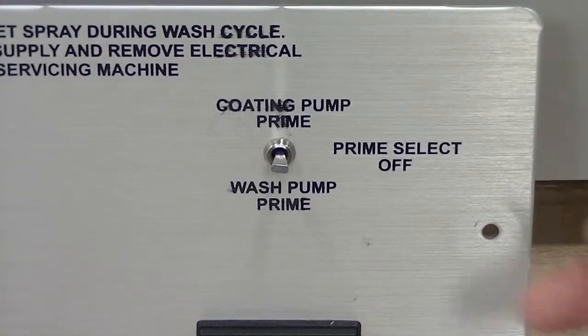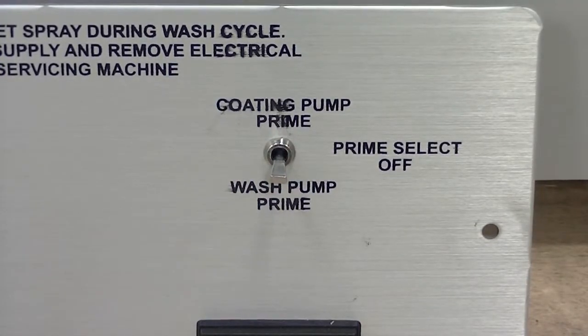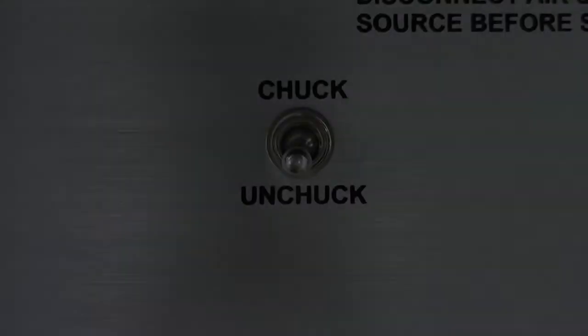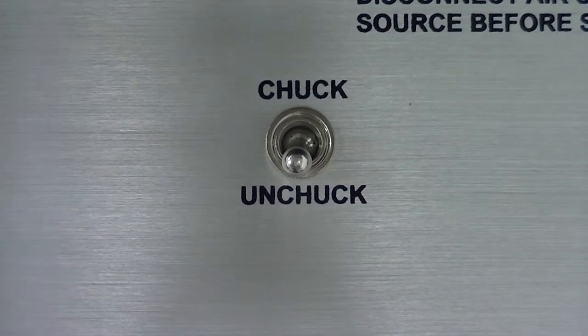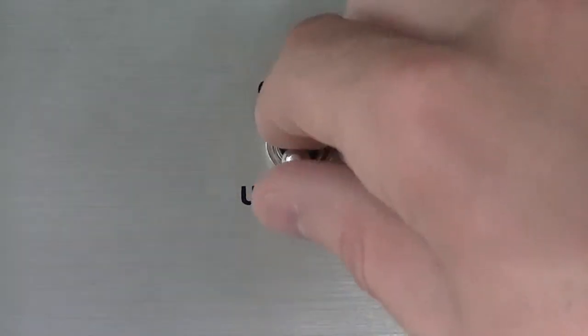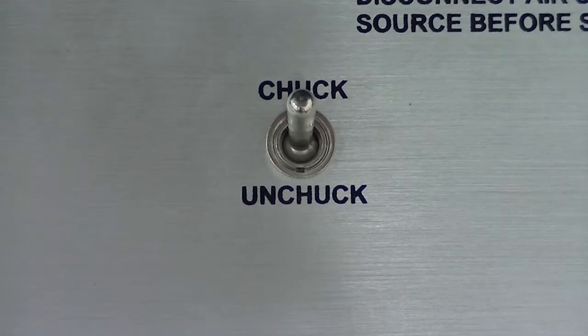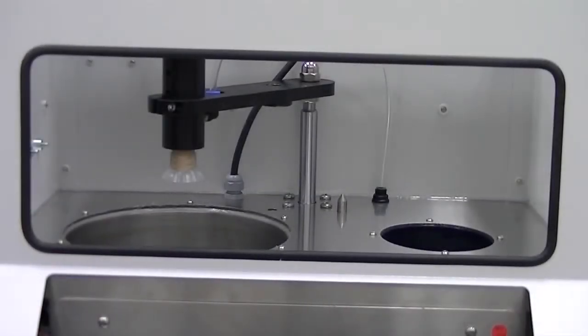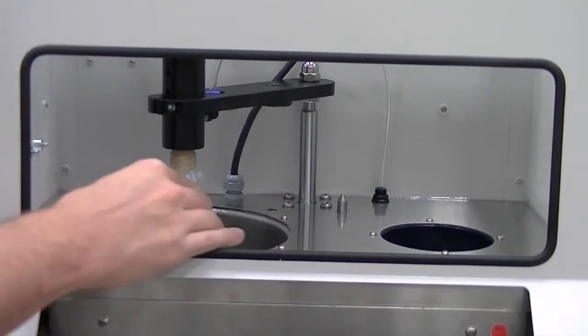Flip switch down to wash prime. Turn chuck switch on. Chuck up sample lens to spindle.